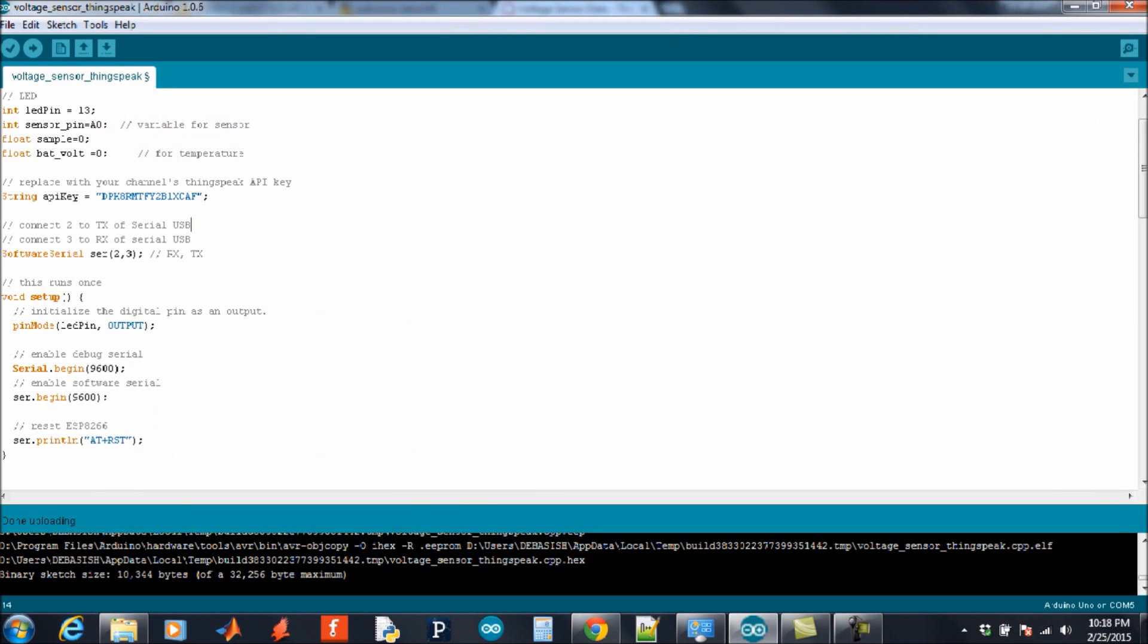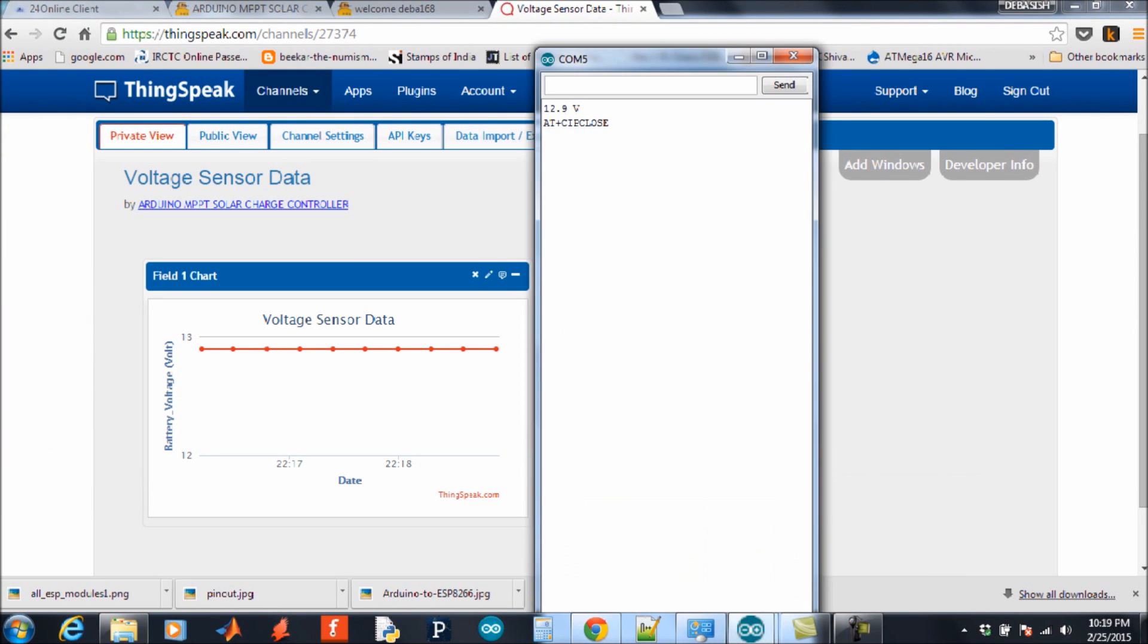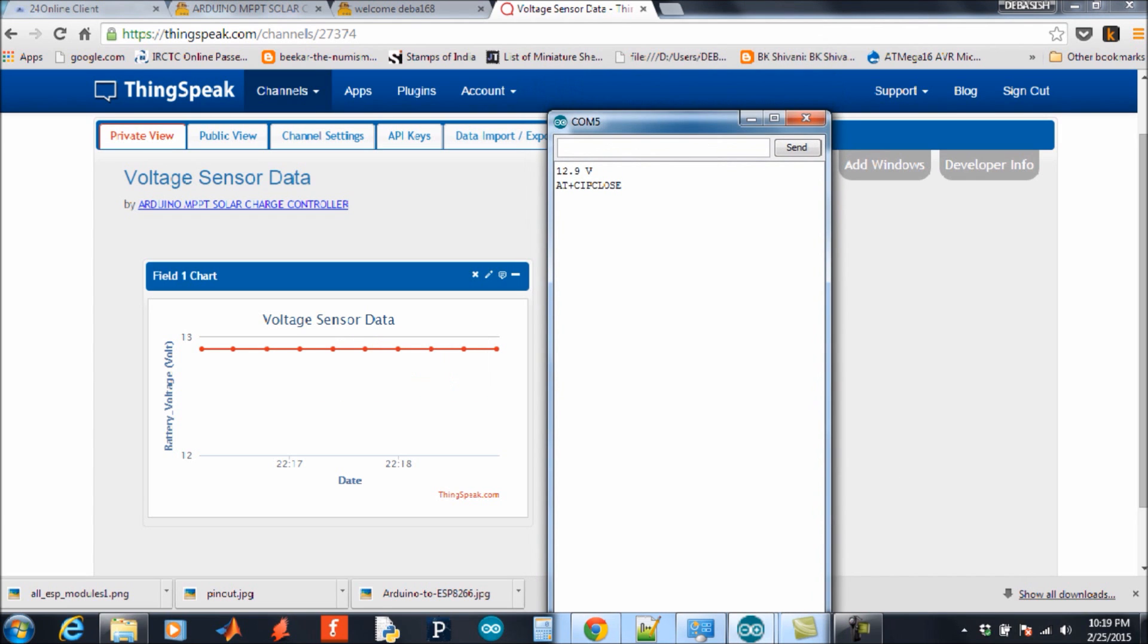For comparison purpose, you can put your serial monitor just near to the plot. It is 12.9V and this value is also 12.9V. Thank you.